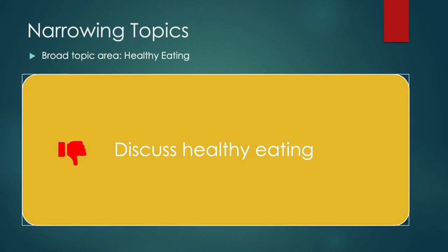Here's an example. The broad topic area is healthy eating, and after thinking about it you decide your question is 'discuss healthy eating.' The good part of the question is that you have a function word — discuss — but other than that there's no narrowing. You cannot just have an essay question such as 'discuss healthy eating.' You need to narrow the question down much more.